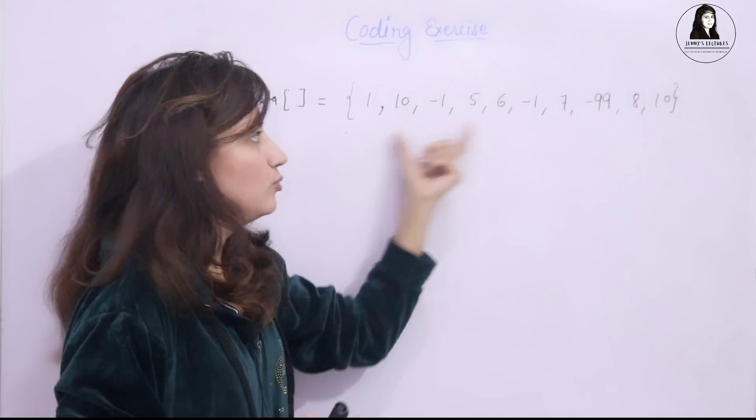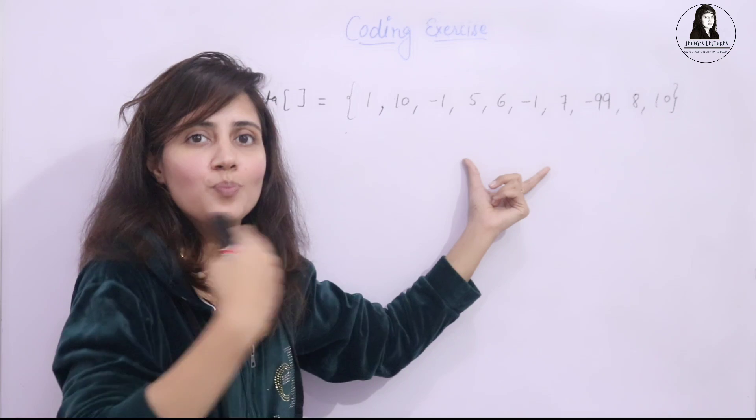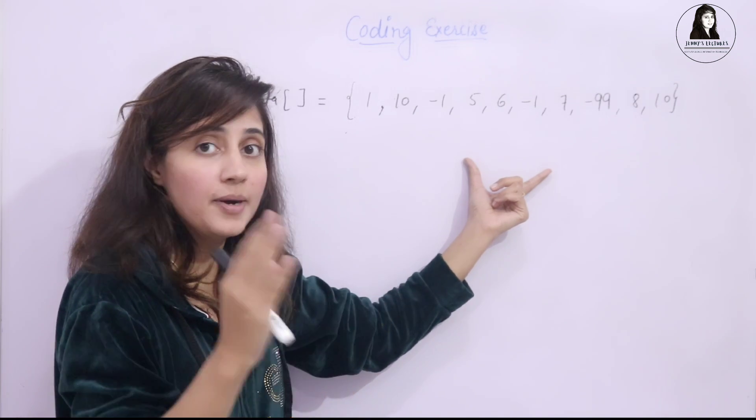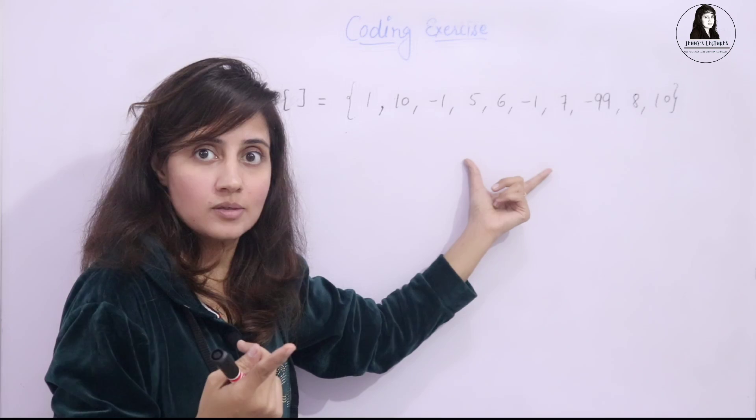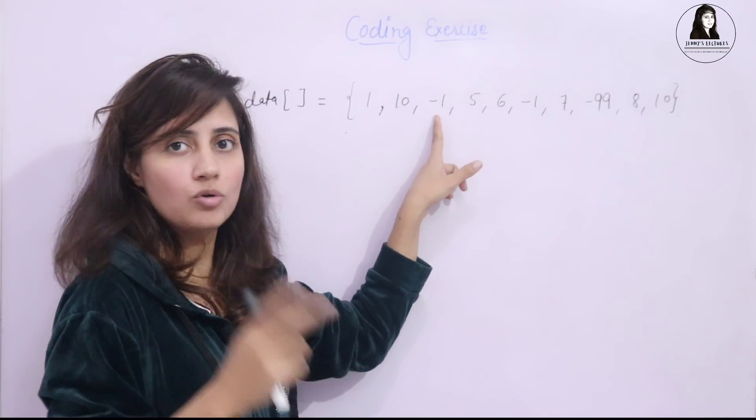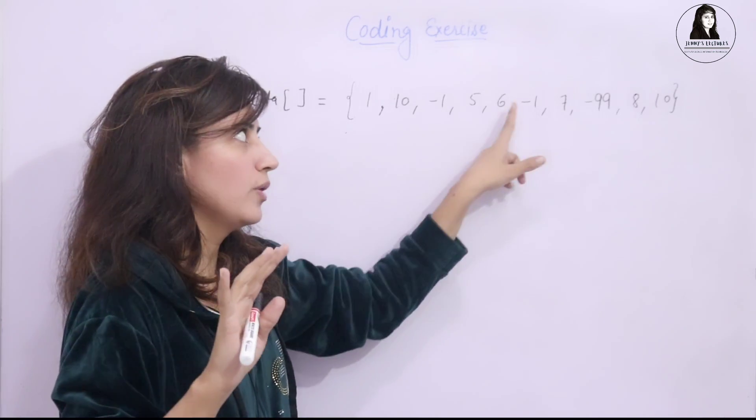Now, what you have to do? You have to process that data. Process means you have to print this data. But you don't have to process noise. Means you don't have to print noise. Means minus 1.